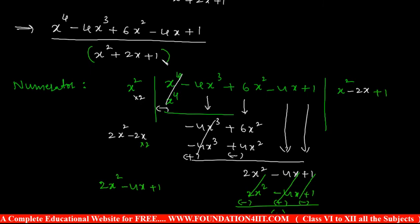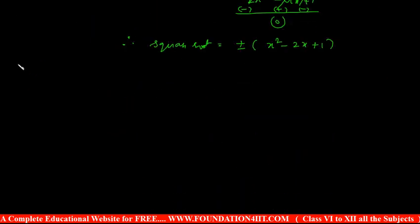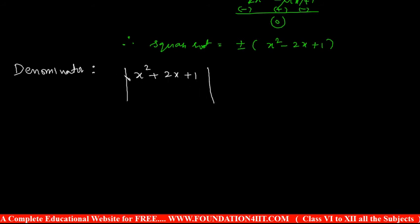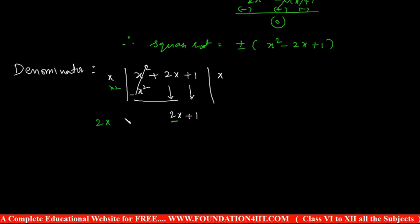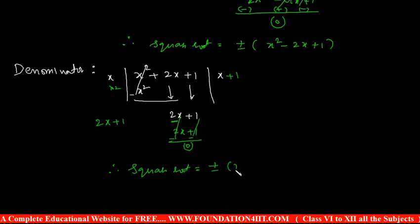For the denominator x squared plus 2x plus 1, apply the same division method. The first term is x. x times x equals x squared. Subtract and cancel. Bring down next two terms: 2x plus 1. Double x is 2x. 2x times 1 equals 2x, so the next quotient term is plus 1. Write 2x plus 1, then cancel — that is 0. Therefore the square root of the denominator is plus or minus x plus 1.